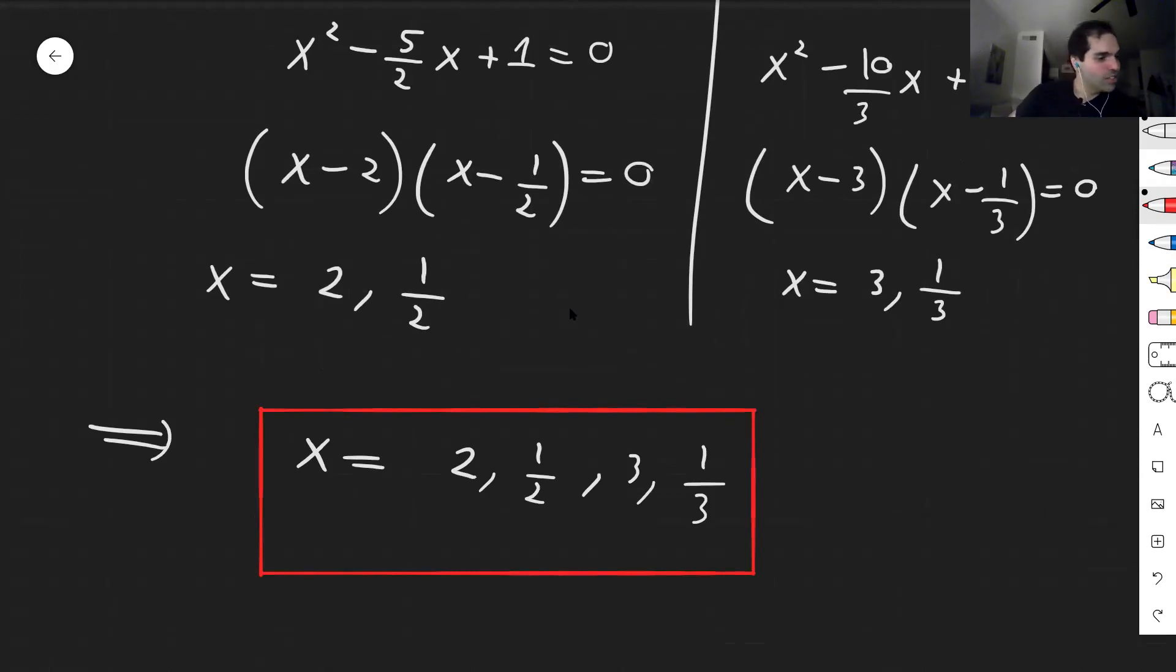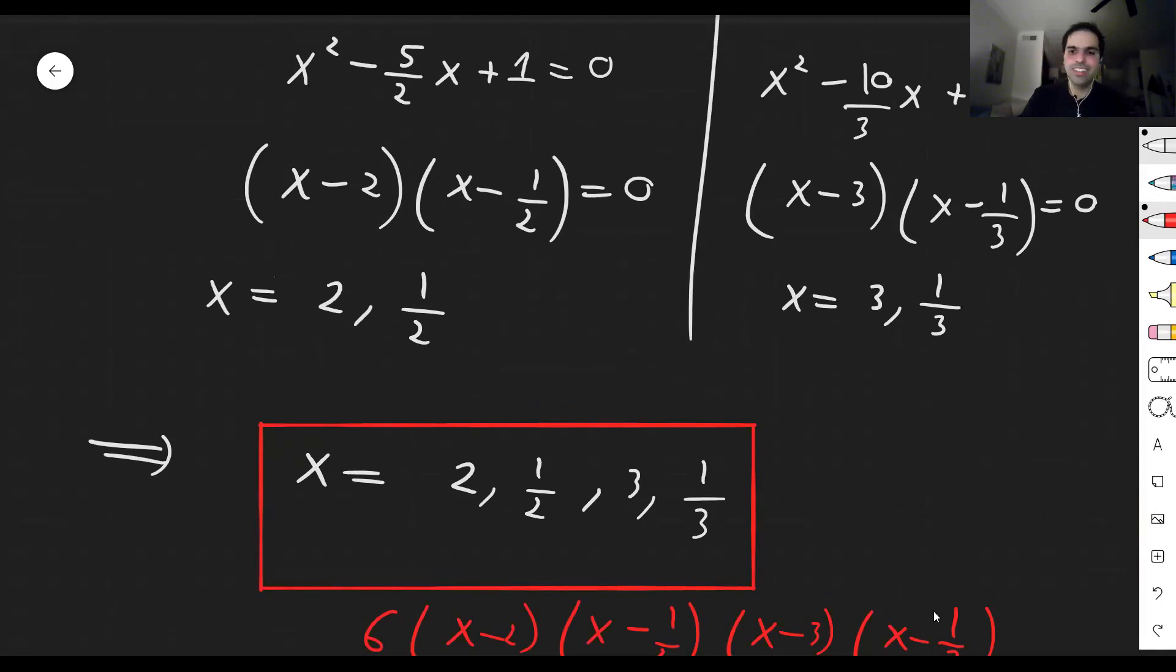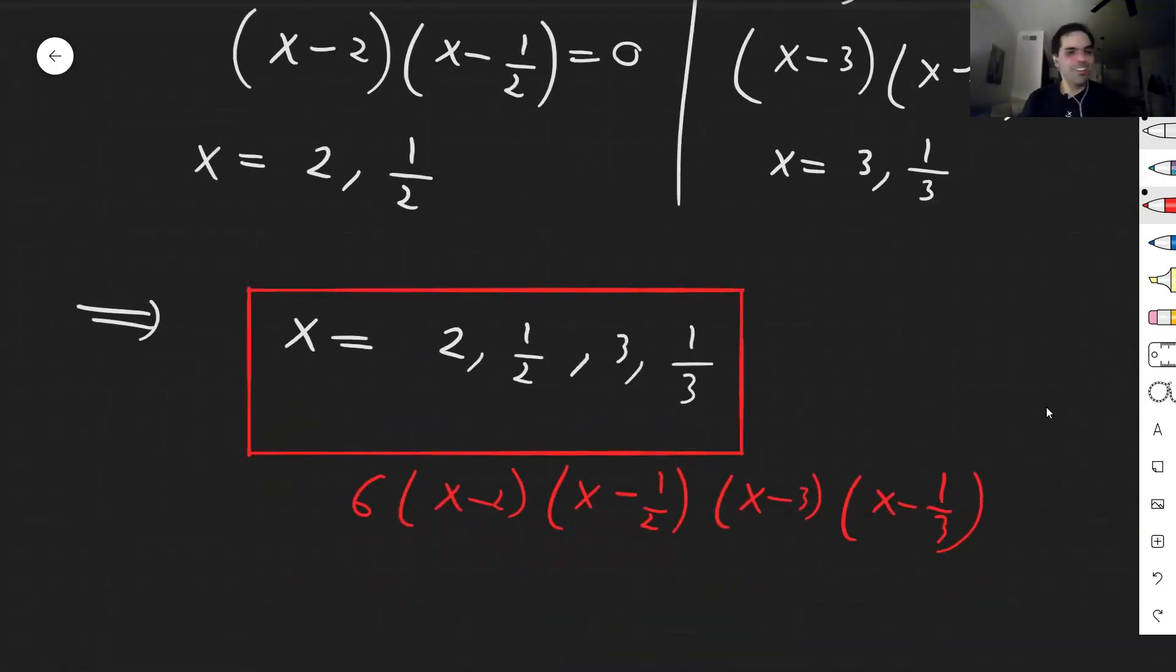In particular, if you want, you can just factor this. If you're curious, I believe it's 6 times x minus 2, x minus 1 half, x minus 3, x minus 1 third. So again, super neat way of factoring a polynomial. And all right, if you like this and want to see more math, please make sure to subscribe to my channel. Thank you very much.